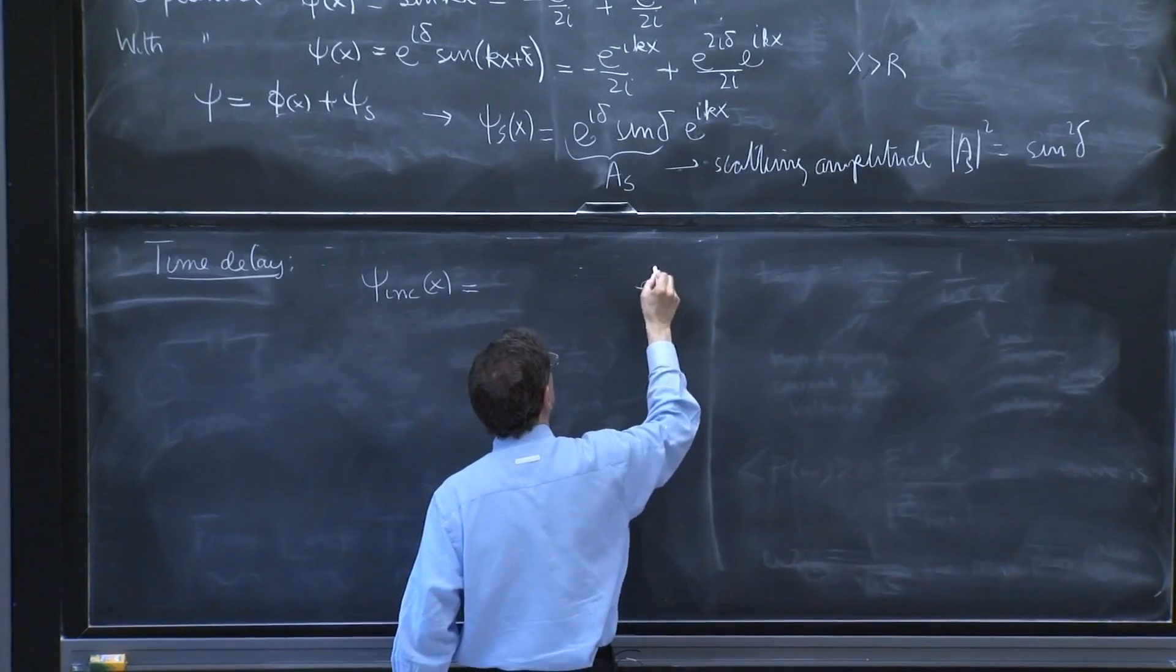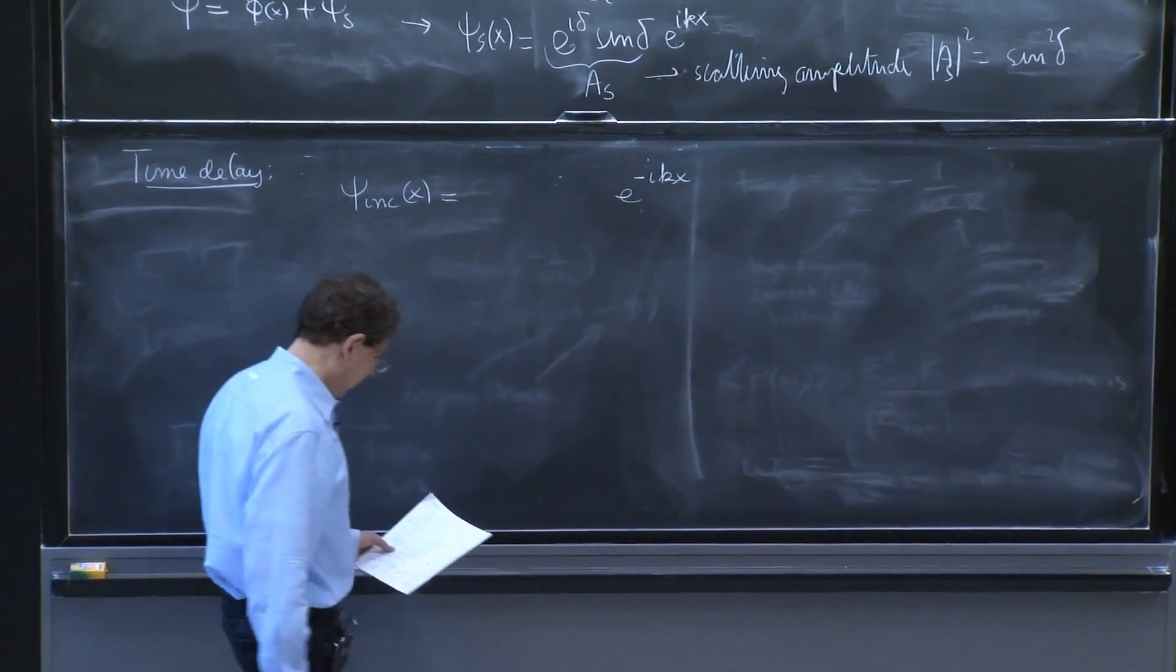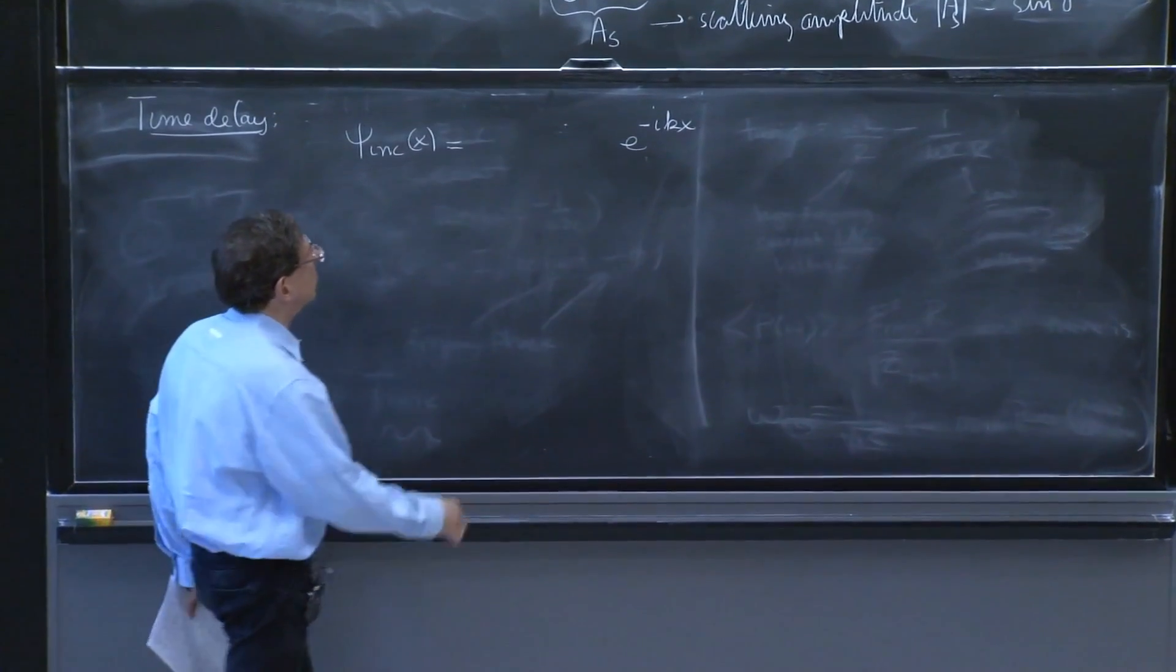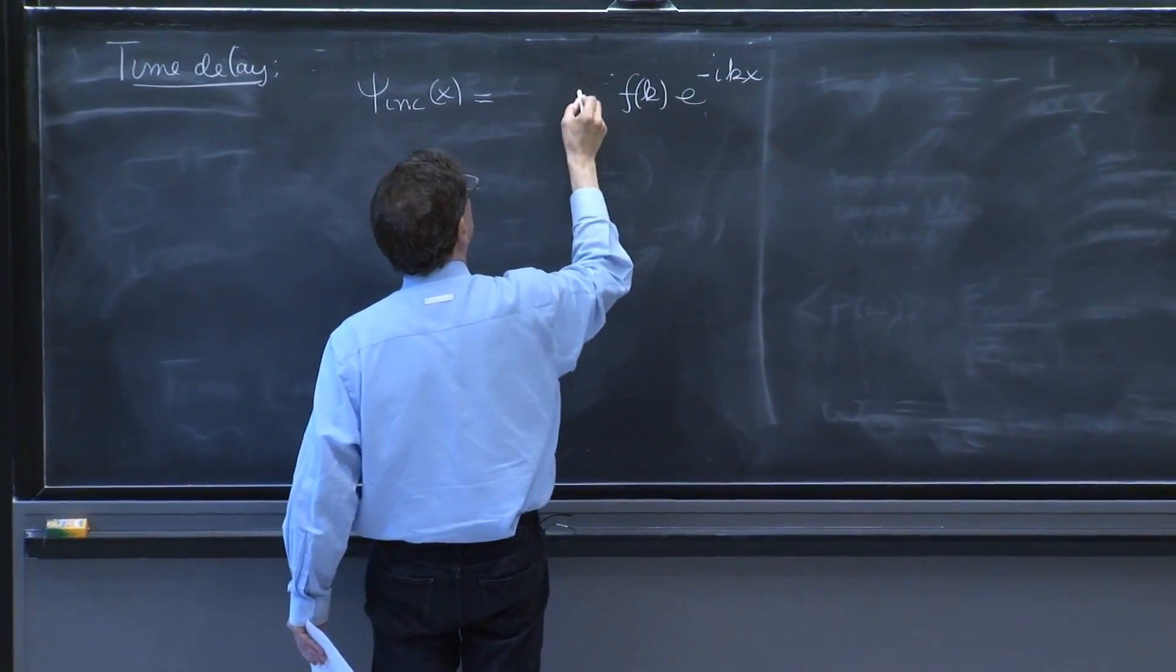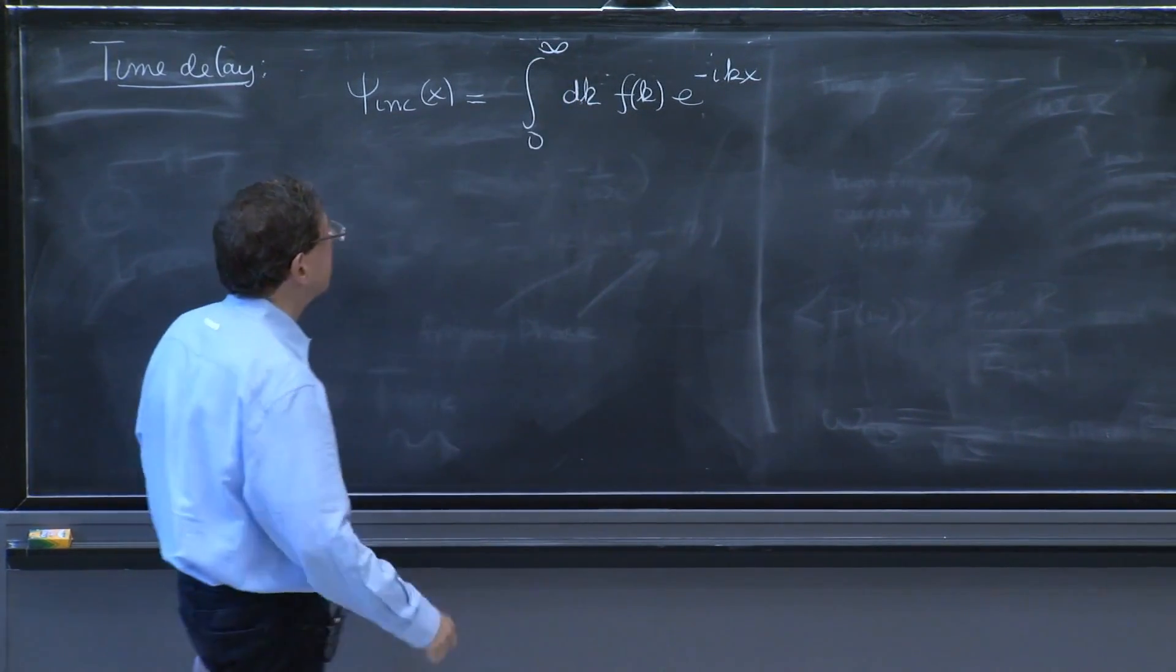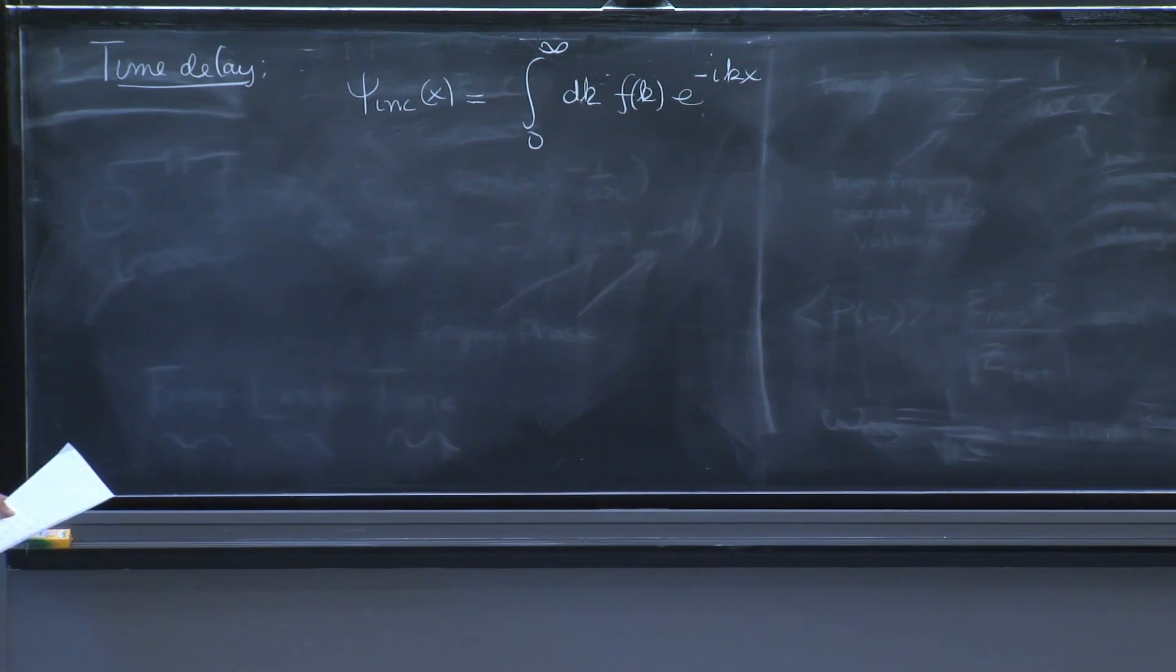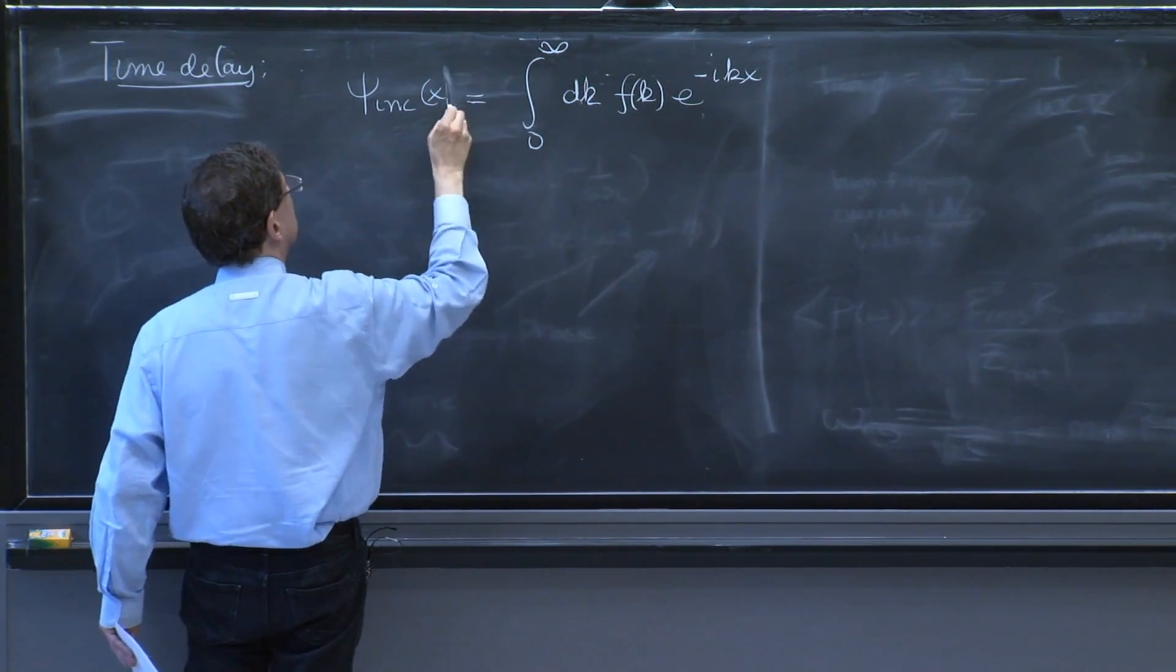Well, it has to be a superposition of e to the minus i kx, for sure. So we'll put a function in front. We'll integrate over k, and we'll go from 0 to infinity.